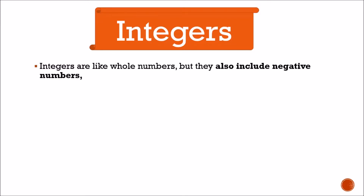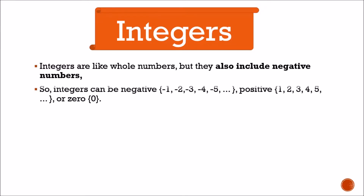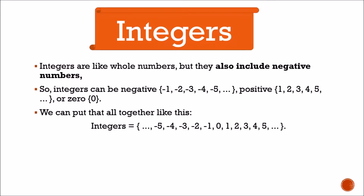Now next is integers. What is integers? Integers are like whole numbers but they also include negative numbers. So integers can be negative: minus 1, minus 2, minus 3, minus 4, minus 5, and so on; positive: 1, 2, 3, 4, 5, and so on; or zero. We can put that all together — integers include positive, negative, and zero.